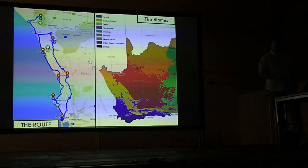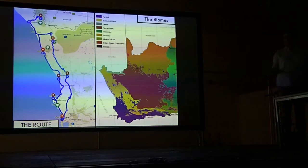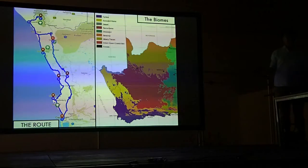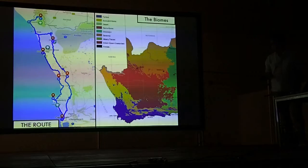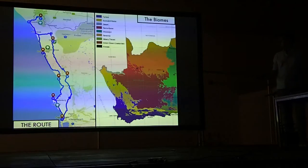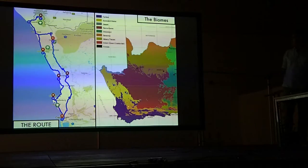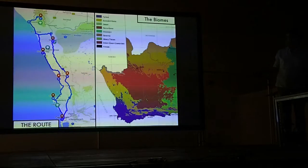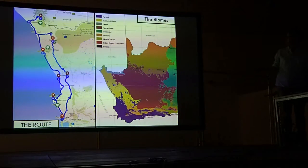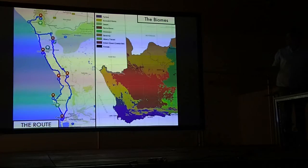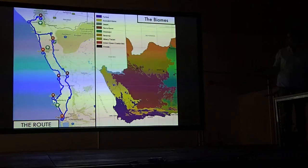On the right-hand side of this image you can see a very simplified map of the different biomes in South Africa. You have the fynbos regions down here marked in purple, you then enter into the succulent Karoo, and then up on the Namibian border you have some of the only genuine desert found in South Africa.